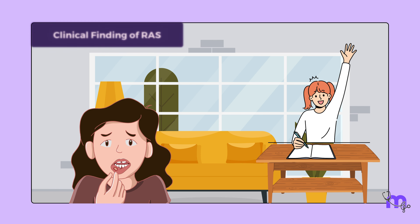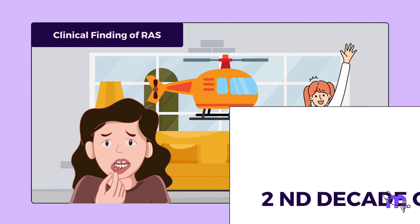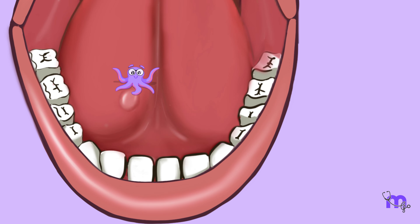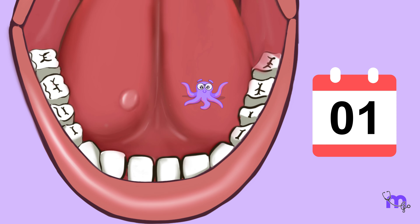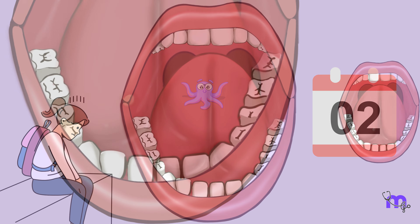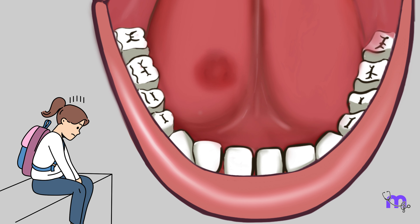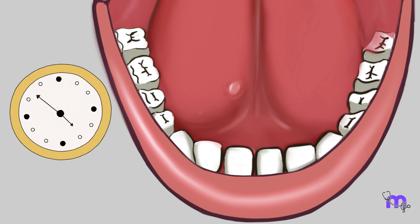Moving on to the clinical findings of RAS. The first episode typically occurs during the second decade of life. The initial sign is often a burning sensation or a feeling of a small bump on the oral mucosa, one to two days before an ulcer appears. This aligns with Maya's experience at age 10, when a burning tongue preceded the ulcer. Usually, a localized erythema develops first. Within a few hours, a small white papule forms, which then ulcerates and gradually enlarges over the next 48 to 72 hours.